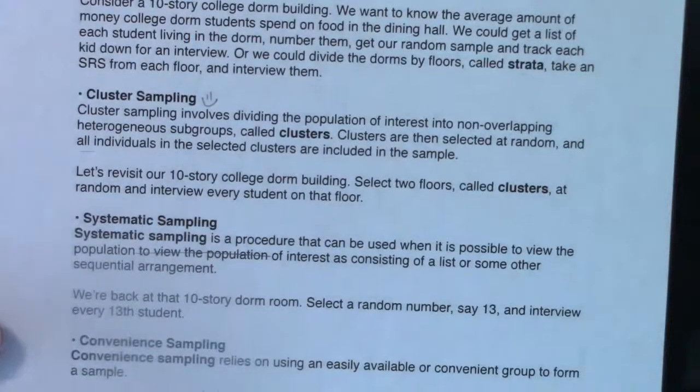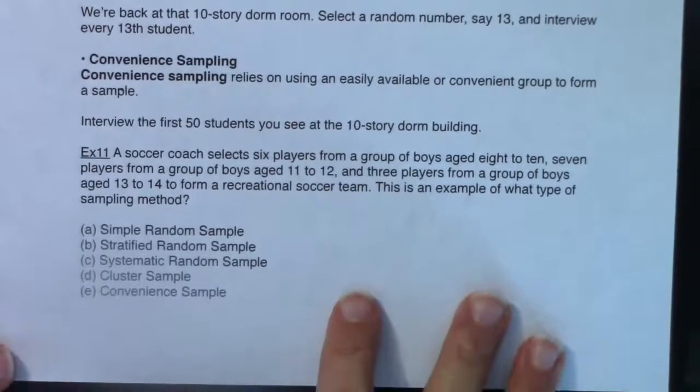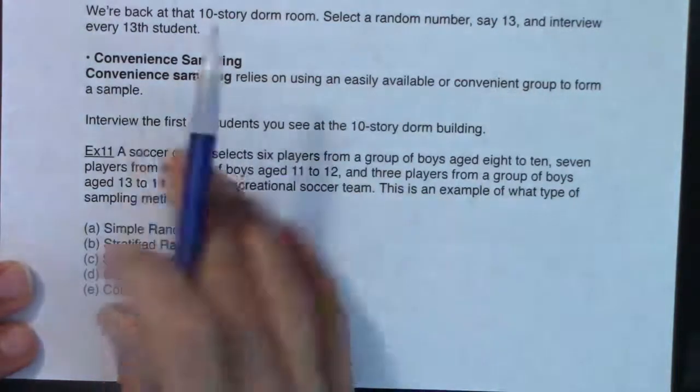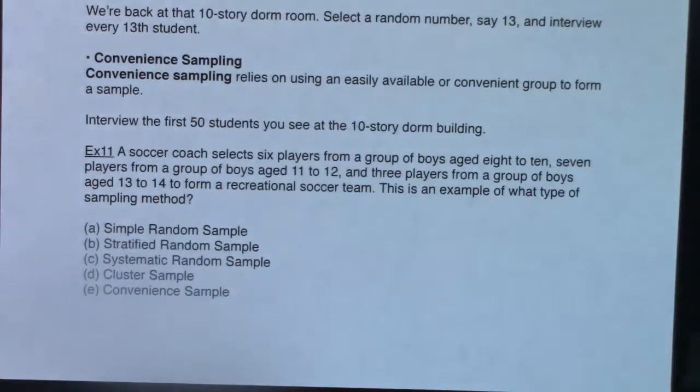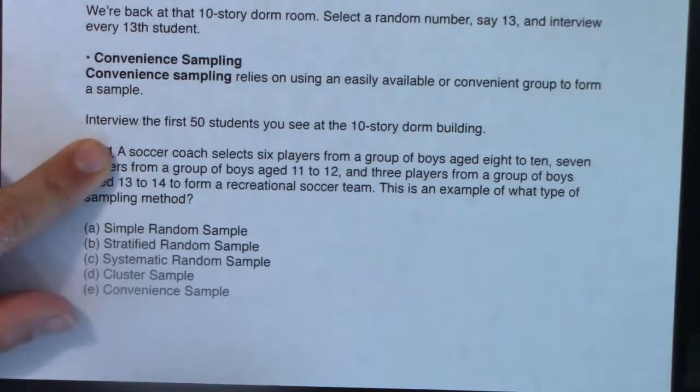We've got the convenience sample and it's very common. I see it all the time, but it is the worst of the methods. It's not a random sample. It's definitely not a simple random sample. It relies on using an easily available or convenient group to form your sample. You've probably done this at some point in your career - you had some homework assignment where you had to get a survey or opinions of five people, and you probably asked your five friends or the five people sitting next to you in your class. A convenient sample I see is those folks in the mall that want to talk to you that are in the kiosks. If I was going to do it in the dorm, I'd interview the first 50 students I saw. That's the convenience sample.